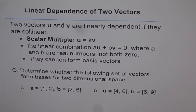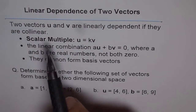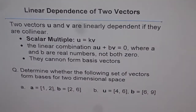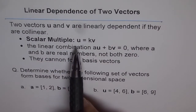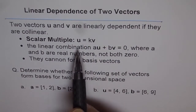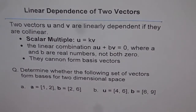Let's understand the meaning of linearly dependent and linearly independent vectors. We'll discuss two vectors, whether they are linearly dependent or not. The two vectors u and v are linearly dependent if they are collinear — that means they are parallel or can be represented by a scalar multiple. So vectors u and v are linearly dependent if vector u can be written as k times v, where k is some real number.